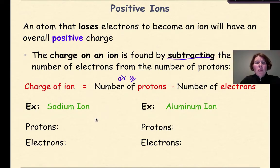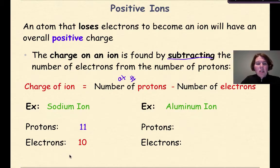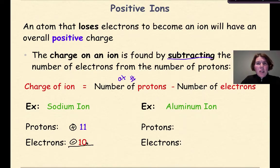So let's look at a sodium ion. We know that in sodium, the number of protons will be 11, and electrons are going to be 10. Now if I take the difference between these two — protons are positive and electrons are negative — I'm going to have more protons than electrons. So my overall charge here is going to be plus 1.